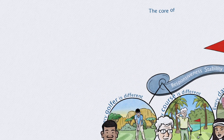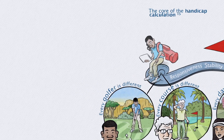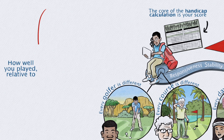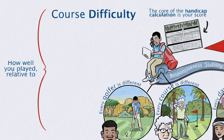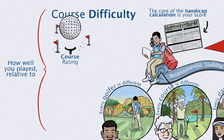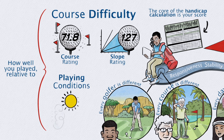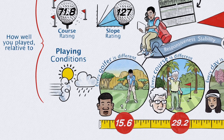At the core of the handicap calculation is your score, demonstrating how well you played your round relative to the course's difficulty, as determined by its course rating and slope rating, and any conditions that might have made the course harder or easier to play on the day.